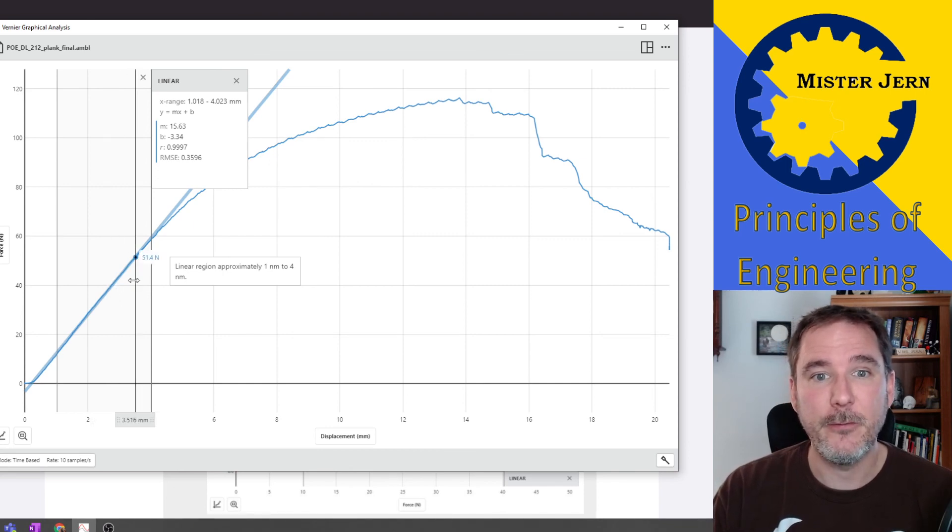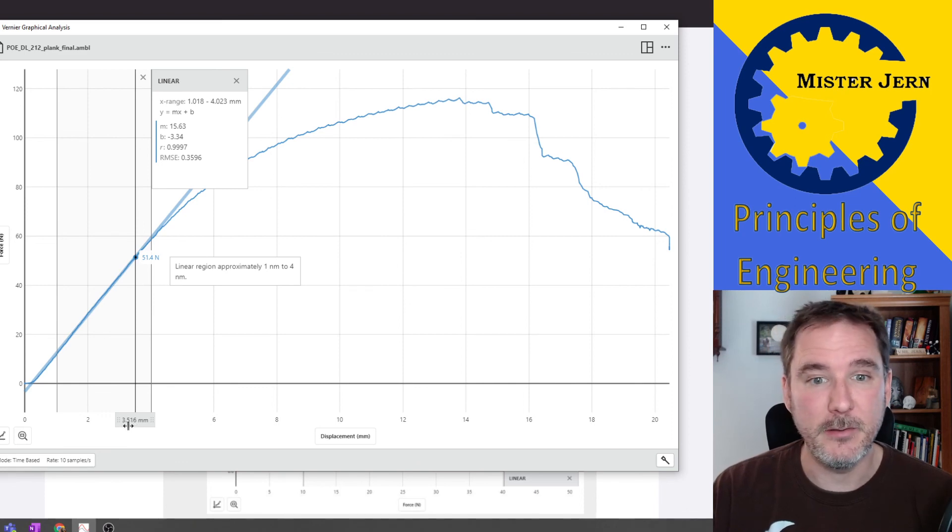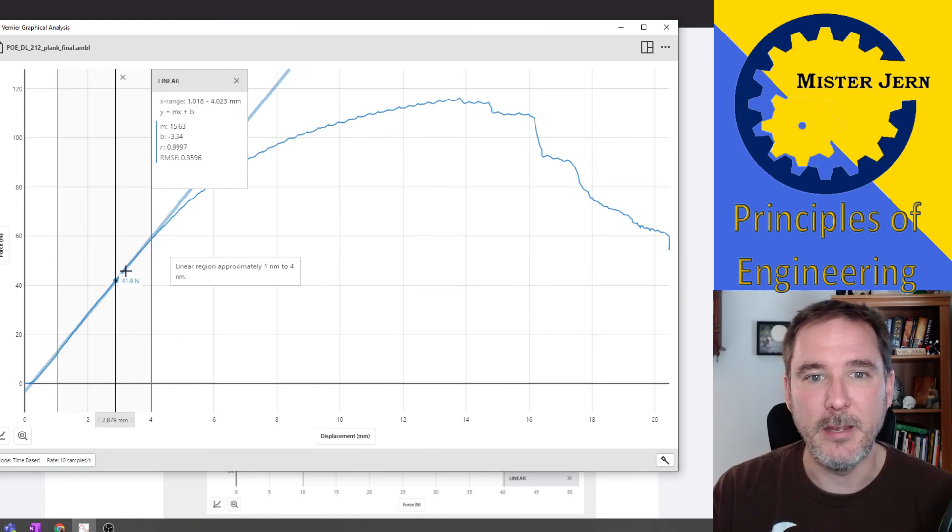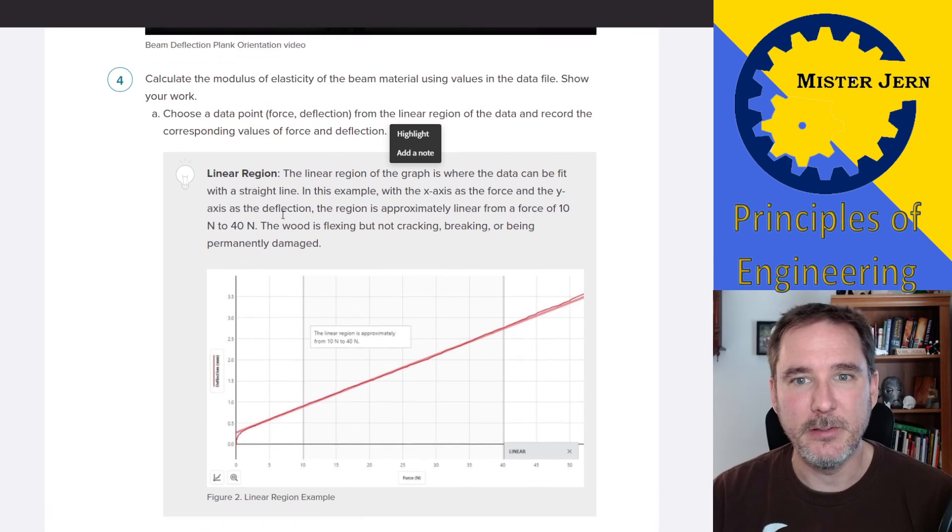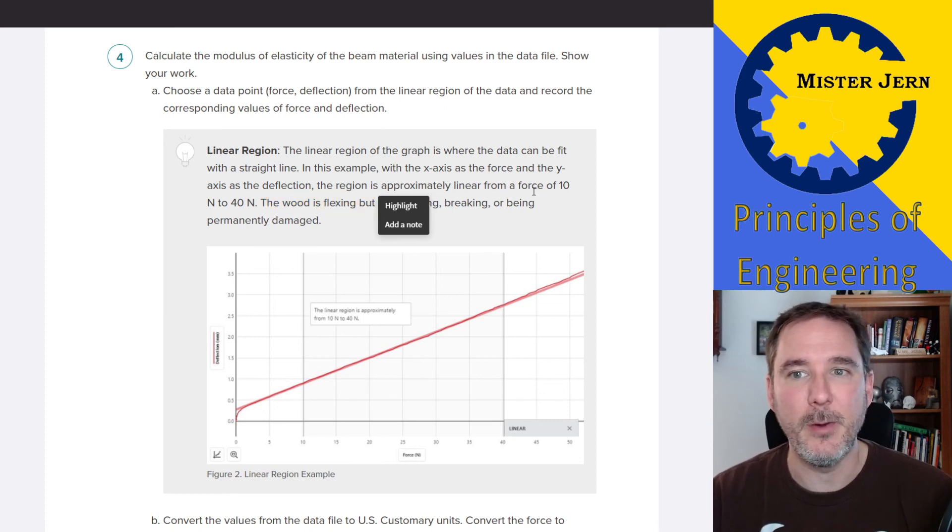All you got to do is pick a spot in there. It's going to tell you how much force there is in Newtons—in this case, 51.4. I just randomly clicked. And it'll tell you how far the beam deflected in millimeters, in this case, 3.516. You can click anywhere in the linear part. It's fine. Maybe not at the very beginning, though. Maybe just kind of click somewhere near the end before it starts to curve. In this example, that's what this linear region is. The wood is flexing but not cracking, breaking, or being permanently damaged. So that's what we want.